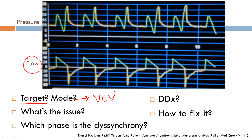Reading each scalar left to right, starting with pressure: the breath is triggered — no issue there. However, after the breath is triggered, you can see a negative deflection, the same on consecutive breaths. The issue is not trigger but target. A negative deflection in the pressure scalar means the patient is actively inspiring, so this is a target dyssynchrony — specifically, flow starvation.